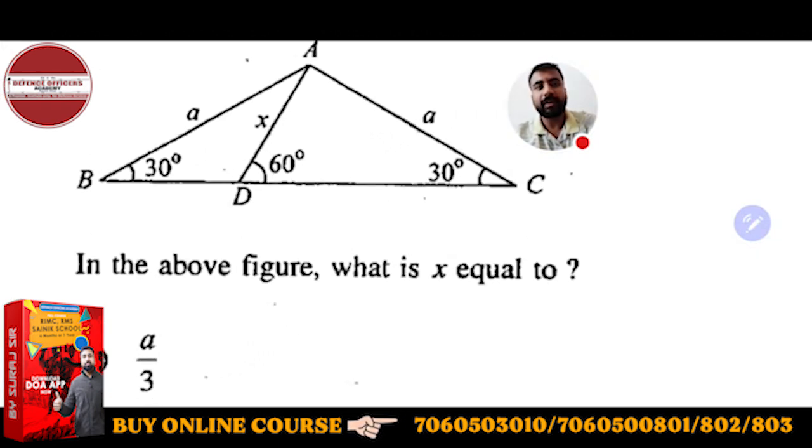This is a triangle and in this triangle few angles are given to you, few sides are given to you. You have to find x. x is this side AD. This side is x which is AD, and AB is given as a and AC is given as again a. These are two same sides. And what you have to calculate, you have to calculate x. You have to find x in terms of a.